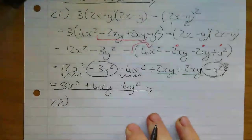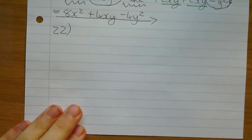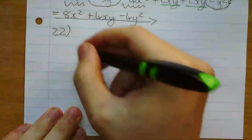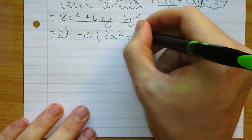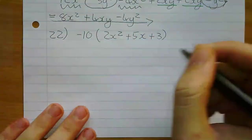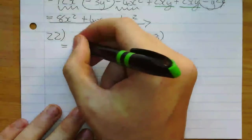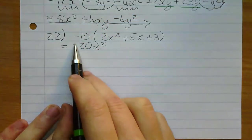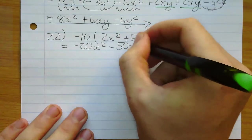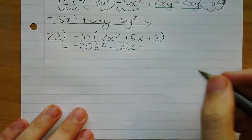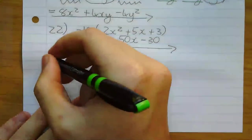Vraag 22: minus 10(2x kwadraat + 5x + 3). Ons gebruik die distributiewe wet - ons maal minus 10 by elke term. Minus 10 maal 2 is minus 20x kwadraat. Min maal plus is min: 10 maal 5 is 50x. Min maal plus is min: 10 maal 3 is 30. Gelyksoortige terme - nou is nie, so dit is jou antwoord: minus 20x kwadraat minus 50x minus 30.